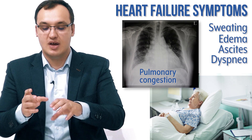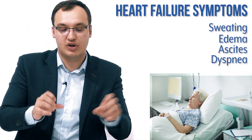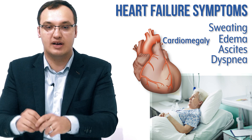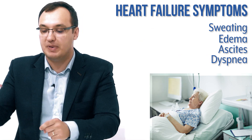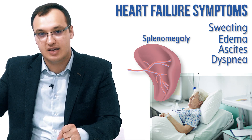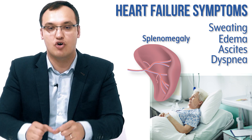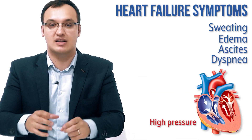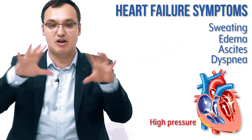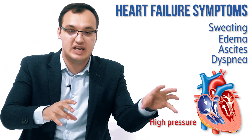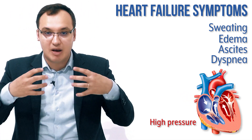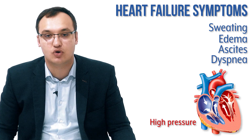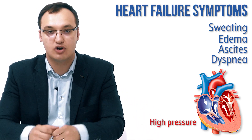In heart failure there is a lot of fluid overload. Water can go into the lungs — this is called pulmonary congestion — causing difficulty breathing. When the heart is not pumping well, pressure builds up into the liver causing hepatomegaly. The heart can also become larger — cardiomegaly. The spleen can get larger too, because the blood from the spleen also goes to the heart. The pressure in the heart is so high that blood cannot flow into it, so pressure builds up peripherally — in the jugular vein, liver, spleen, and stomach veins causing ascites, and leg veins causing edema.